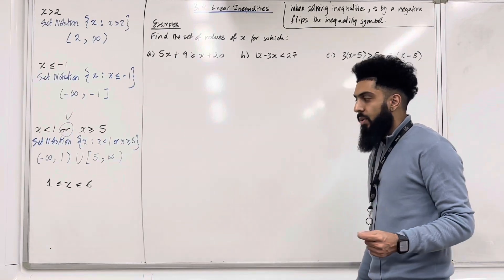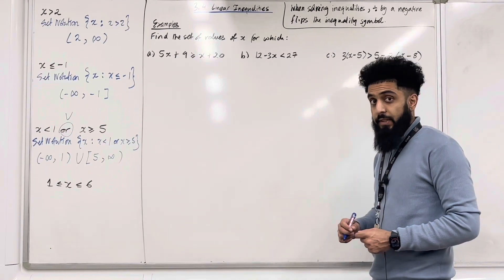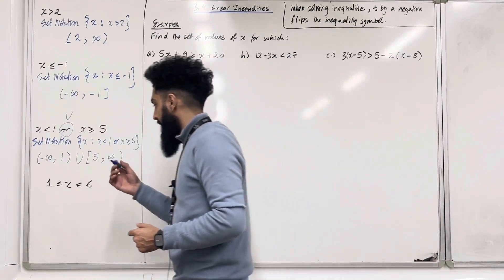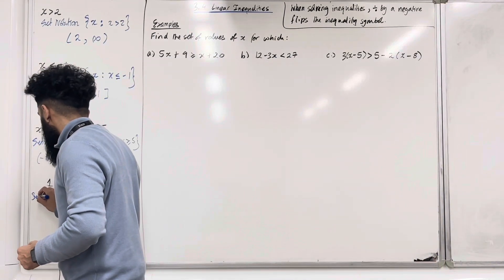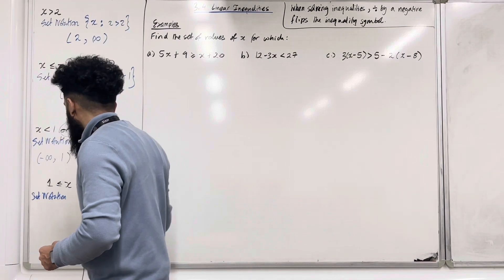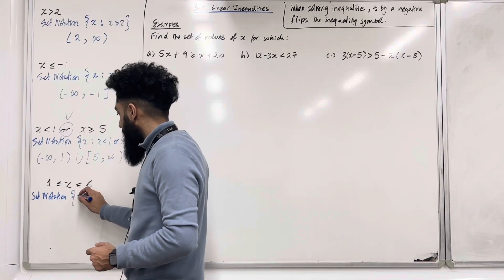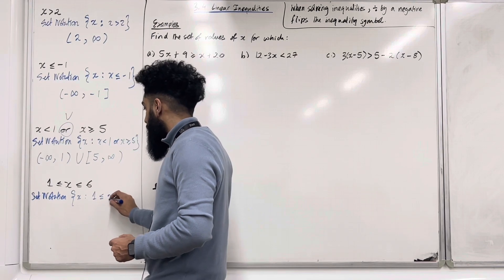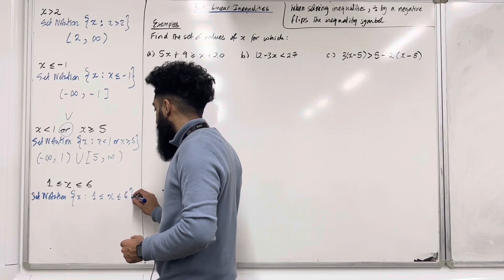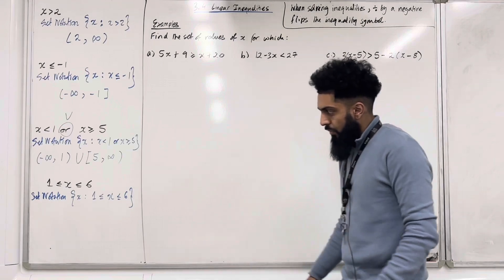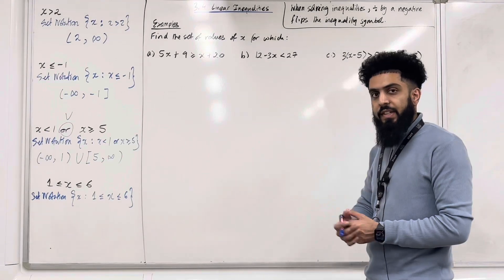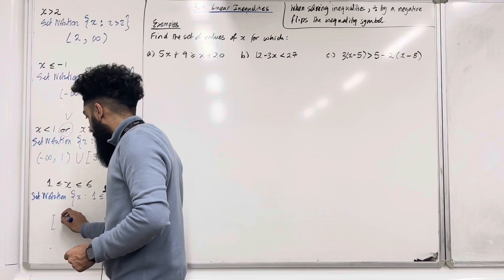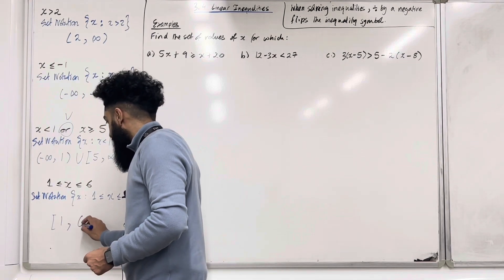Finally, X is more than or equal to 1 and less than or equal to 6. Let's write this in set notation: the set of values of X such that X is more than or equal to 1 but less than or equal to 6. The other way to write this is: square bracket, 1 comma 6, square bracket.